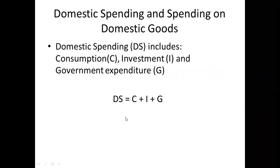Domestic spending and spending on domestic goods — there is a slight difference between these two important concepts. Domestic spending includes three important components: consumption denoted as C, investment denoted as I, and government expenditure denoted as G. So domestic spending DS equals C plus I plus G, which is nothing but aggregate demand in a closed economy.